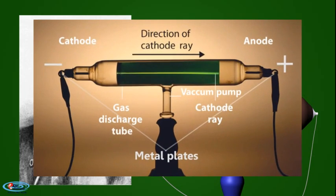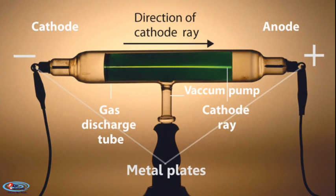A common discharge tube is a long glass tube having two metal plates sealed at its two ends as electrodes. It has a side tube through which air can be pumped out using a vacuum pump, so that experiments can be performed at low pressure.